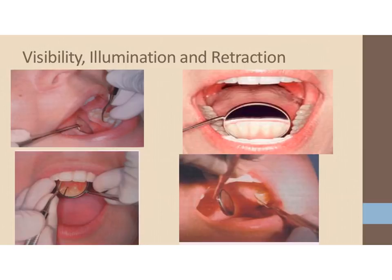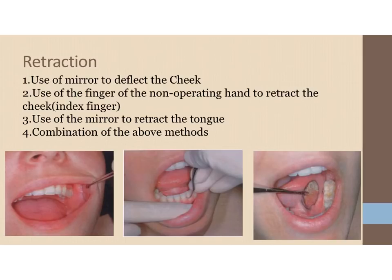Visibility, illumination, and retraction can be achieved using a mirror and your finger. Direct illumination means placing the light directly to the mouth and working in that area. Indirect illumination means using a mirror to reflect the light to see the area. For retraction, use a mirror to deflect the cheek, use the index finger of the non-operating hand to retract the cheek, use the mirror to retract the tongue, or a combination of these methods.